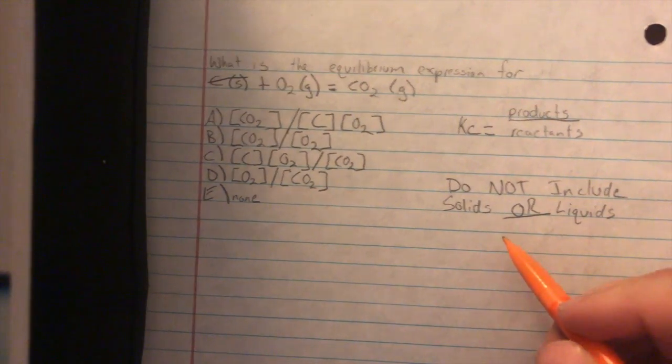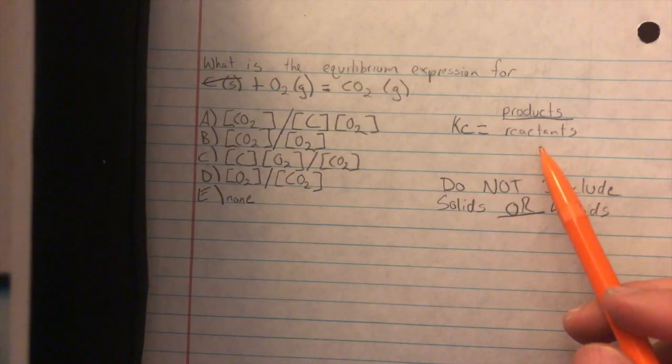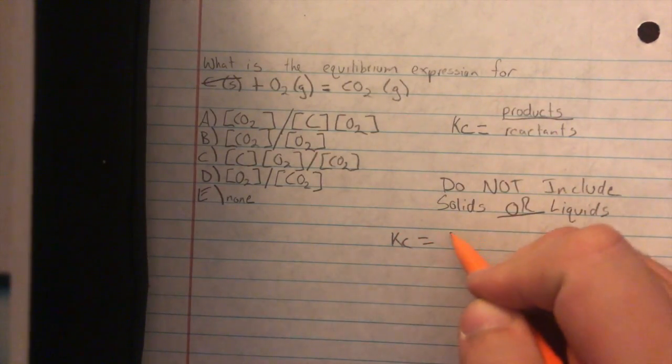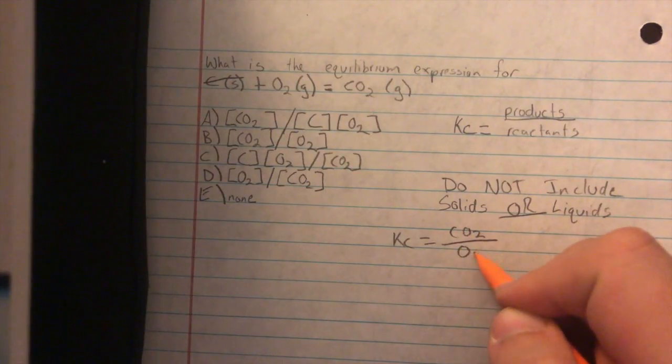Well, from what I told you previously, Kc equals products over reactants. Now we get Kc equals CO2 over O2.